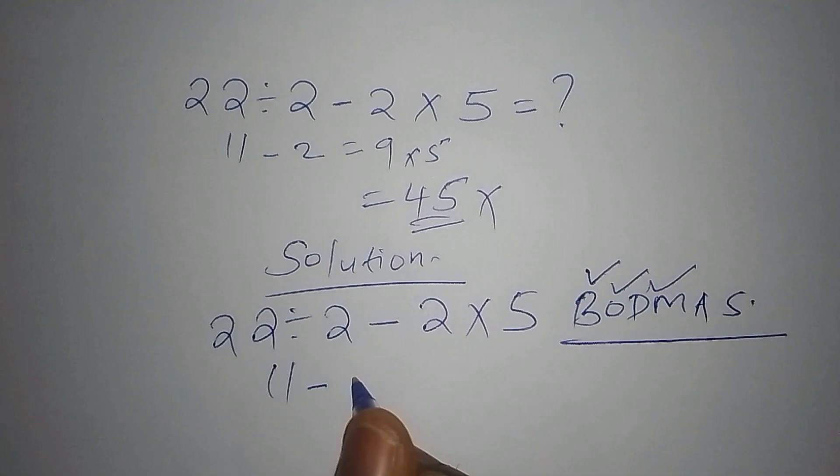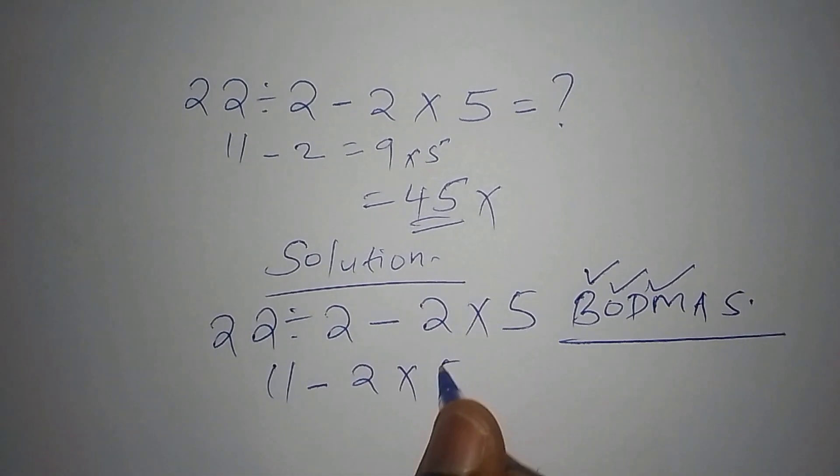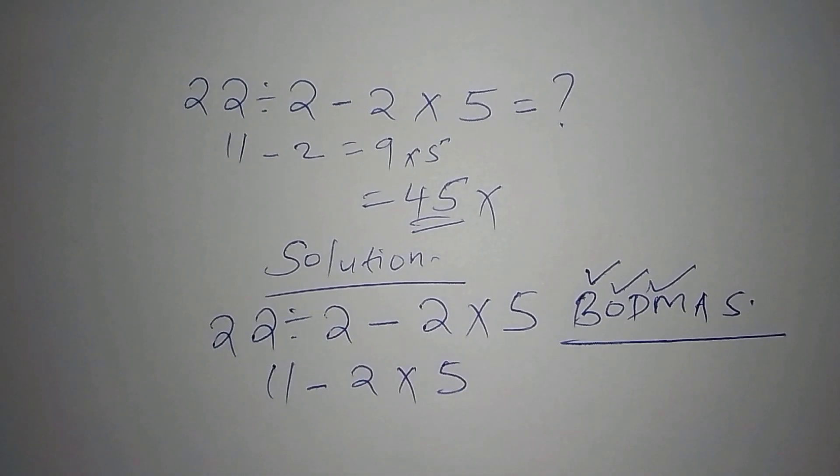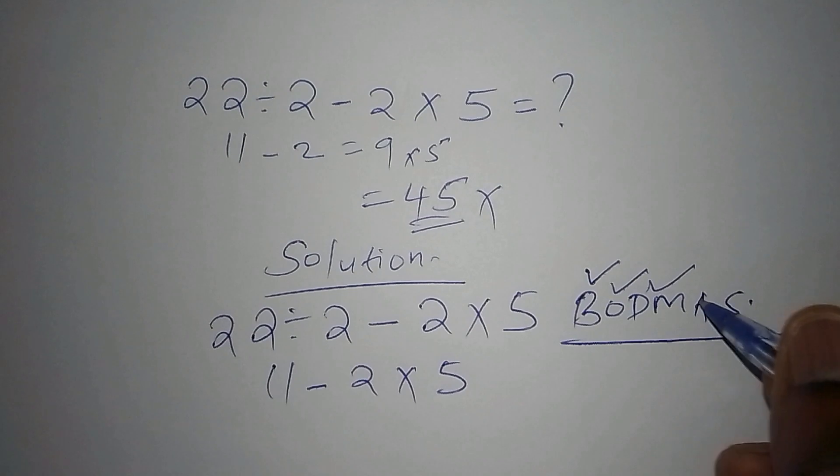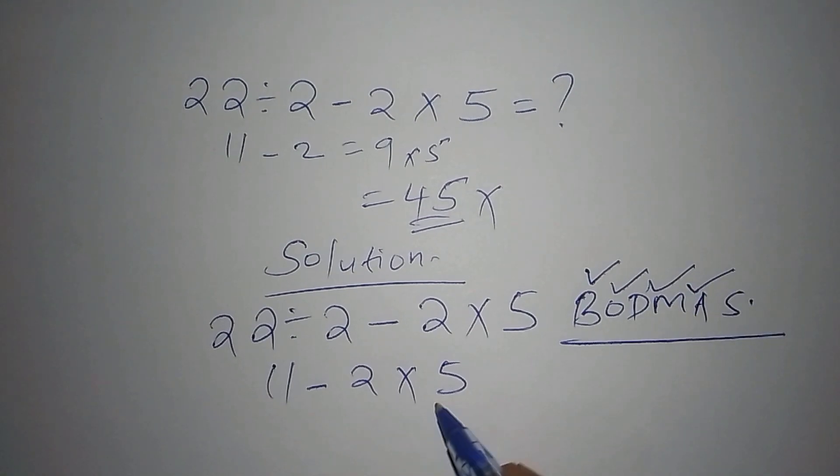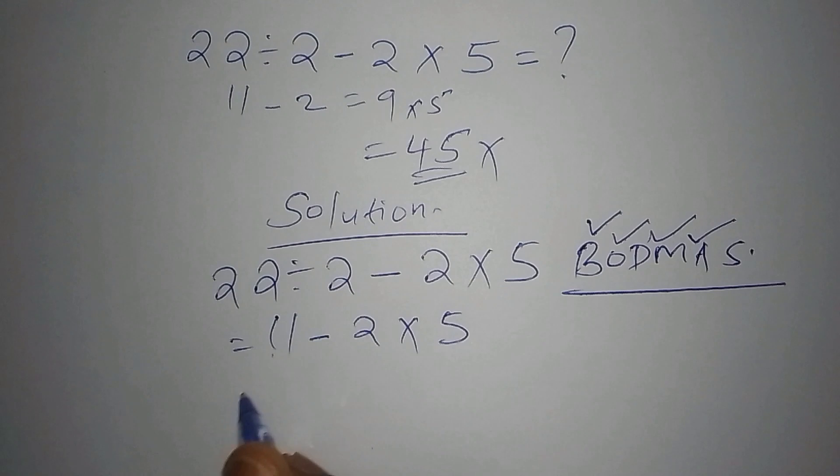So 11 minus 2 times 5. Then we move to the next step, that is M. M stands for multiplication. There is no way you're saying now you are taking 11 minus 2. Don't work it out first. So the next step, you are going to work out this other one.